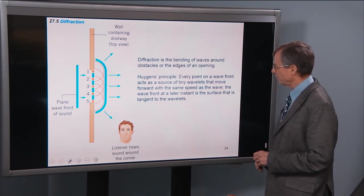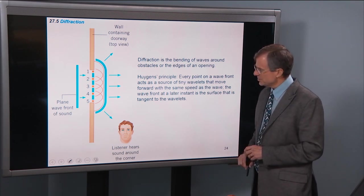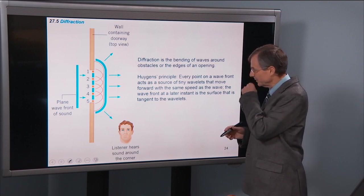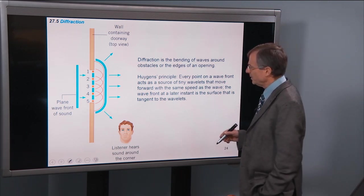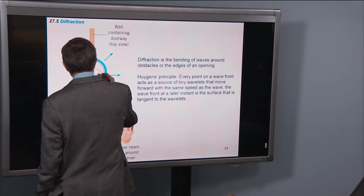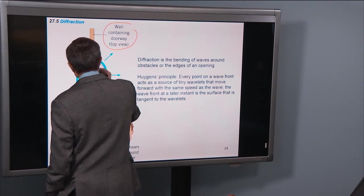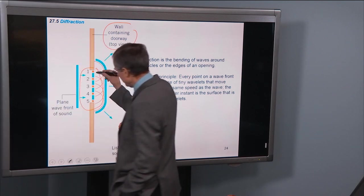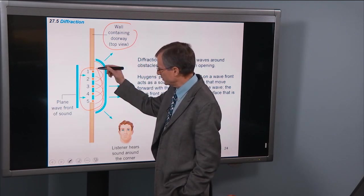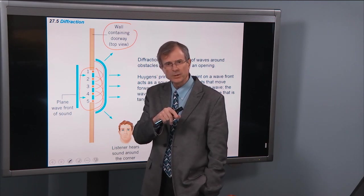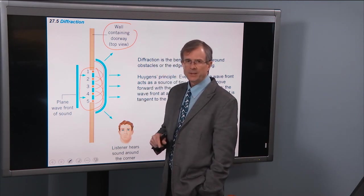The Huygens Principle is used to try and get a handle mathematically on what these things do. You can think, if you've just got an opening, this is a wall containing a doorway. There's a lot of red and blue inside of that opening, but it's just an opening. It's a single slit that I made reference to earlier when we talked about the video demonstration.